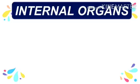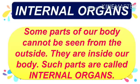Internal organs. We have learned about external organs and sense organs. External organs are the organs or parts which we can see with our eyes, and sense organs are also a part of external organs. Now, some parts of our body cannot be seen from the outside — they are inside our body. Such parts are called internal organs.